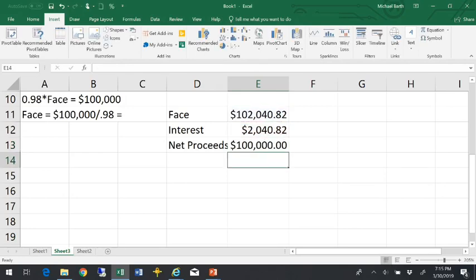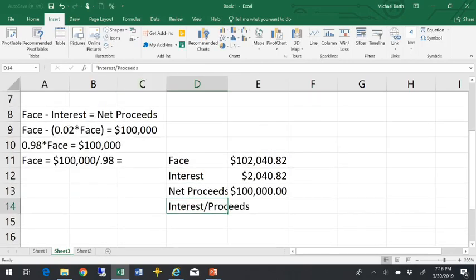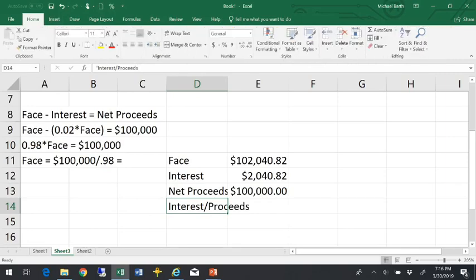Now what they pay back, they actually get $100,000, and they pay back $102,040.82. So if we look at the simple interest rate here, if you look at the interest divided by what you actually get by the proceeds, the interest rate is slightly higher than 2%.